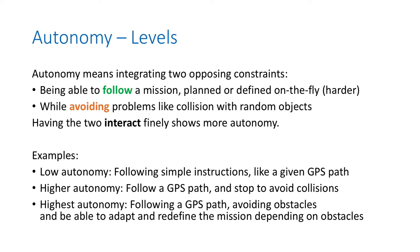A low level of autonomy would be following simple instructions, like following a GPS path. A higher level of autonomy would be following a GPS path but being able to detect an object and stop to avoid collisions. And an even higher level of autonomy would be to follow the GPS path, avoid collisions, and being able to go around the object to continue your mission.